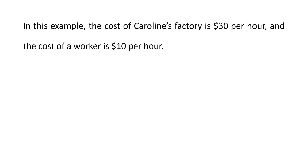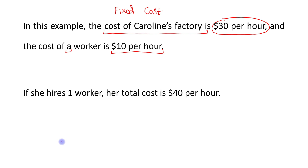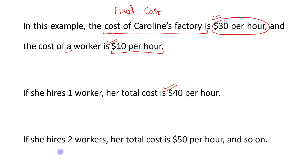In this example the cost of Caroline's factory is $30 per hour, which is the fixed cost. The cost of one worker is $10 per hour. So if she hires one worker her total cost is $40 per hour — $30 plus $10 equals $40. If she hires two workers her total cost is $50 per hour, and so on.